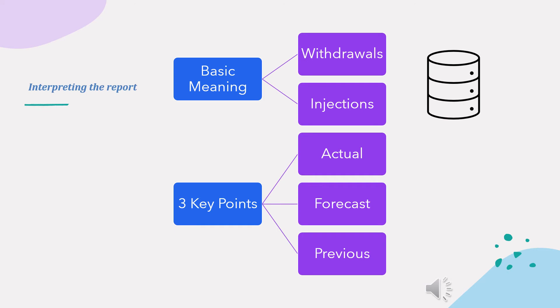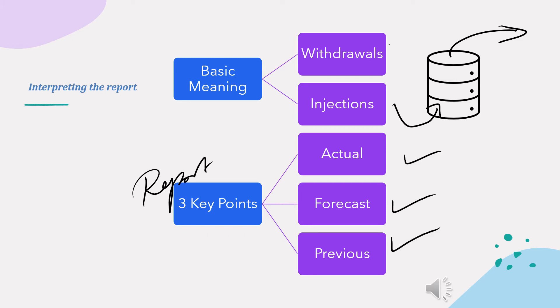To understand the report simply: it portrays the natural gas storage estimate, measured weekly, and when it changes it means either withdrawals or injections to storage. There are three data points in every report: actual, forecast, and previous. Your analysis should be based on these values. This report can influence the price of natural gas immediately upon release.